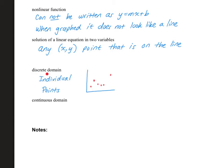A discrete domain is when you have individual points. They might form a line or not, but if you have individual points, then it's a discrete domain. A continuous domain is when you don't have individual points — instead, you have a curve or a line that connects things together. That would be a continuous domain.